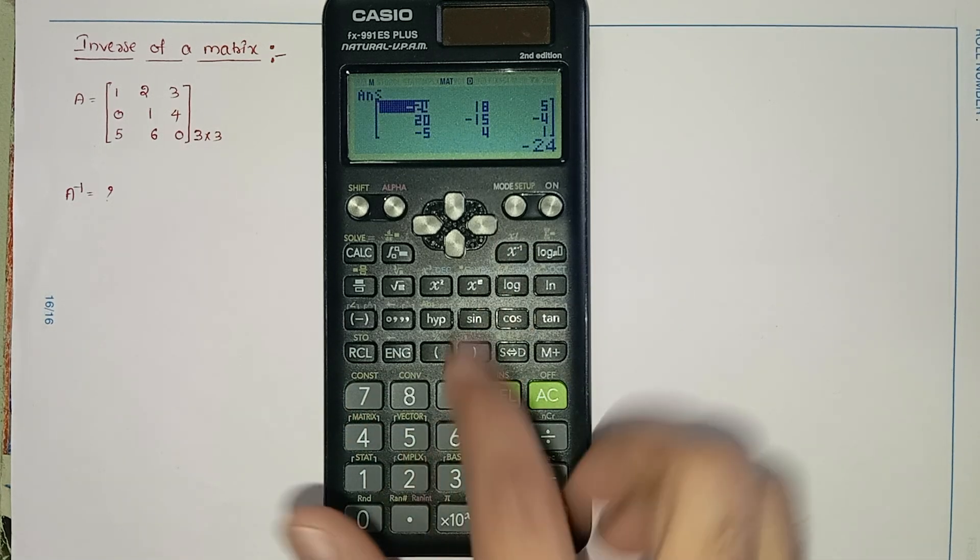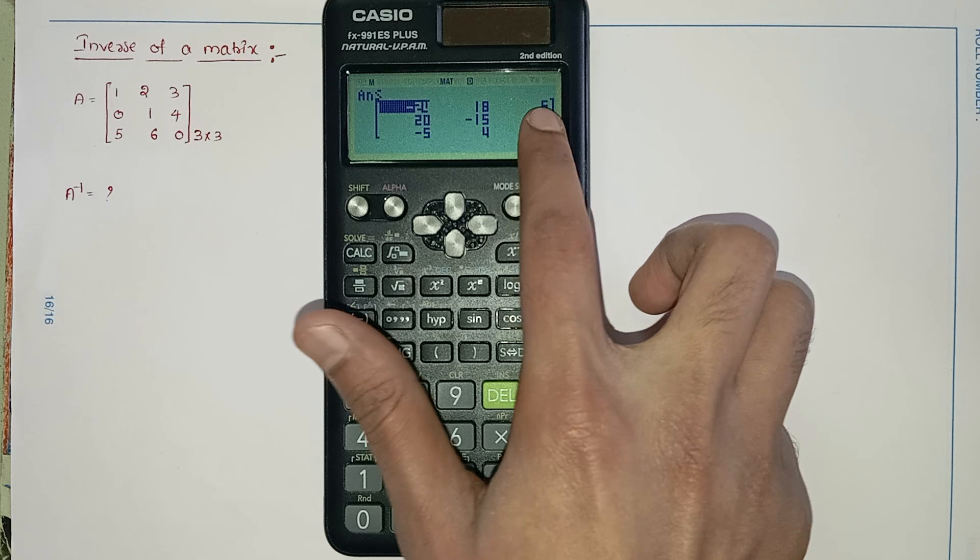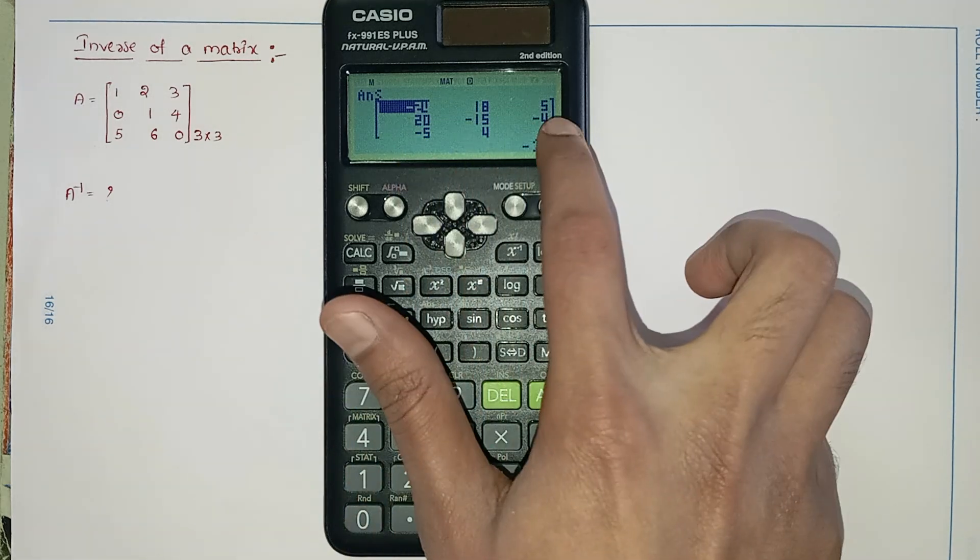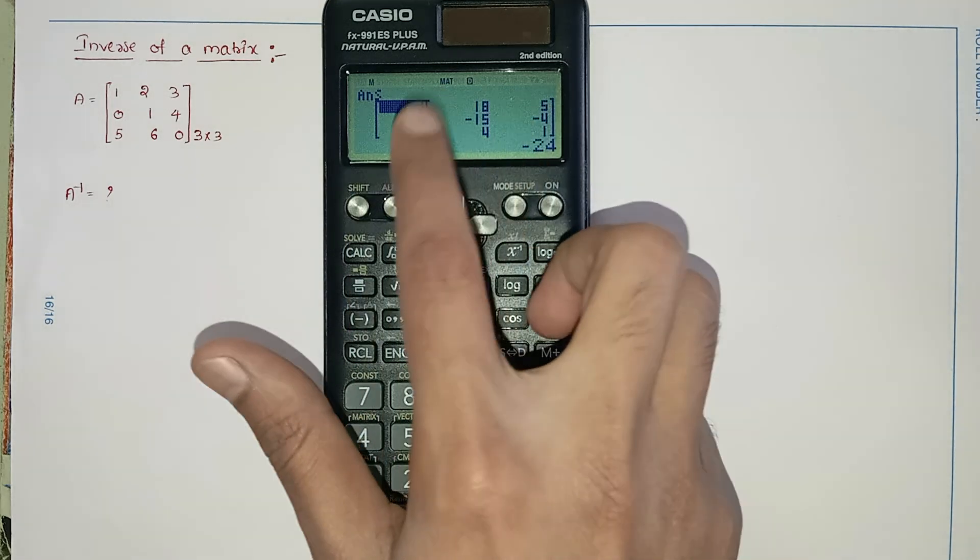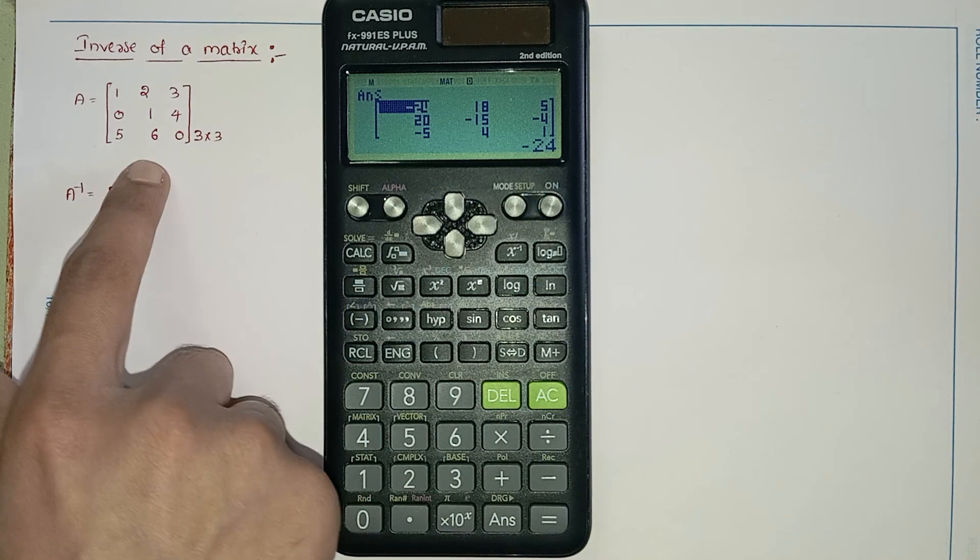We will get the inverse of the matrix: minus 24, 18, 5, 20, minus 15, minus 4, minus 5, 4, 1. These are the inverse matrix elements of the given matrix A.